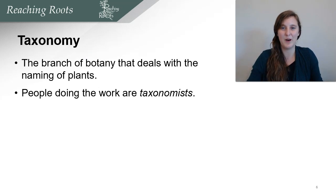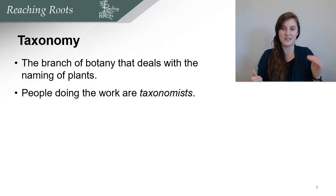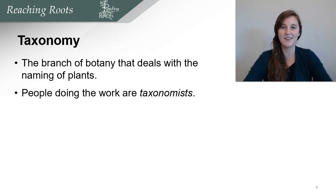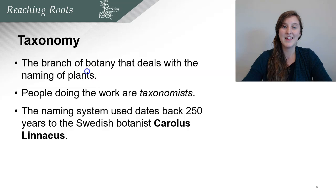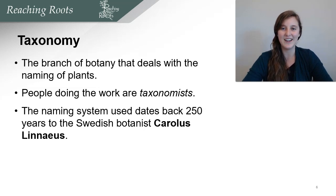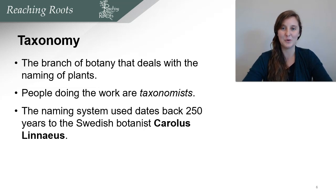Taxonomy is the branch of botany that uses this classification system to name plants. People who work to name plants are called taxonomists. The taxonomist who originally developed this naming system is Linnaeus, so the system we use today dates back 250 years. Of course, the system has been improved upon and added to, but the roots of it come from Linnaeus.